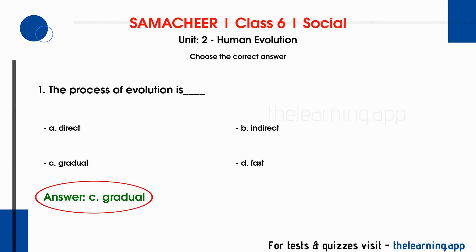Our ancestors, the monkeys — humans are coming from them. That process is a very gradual process. That is why evolution is called a gradual process.